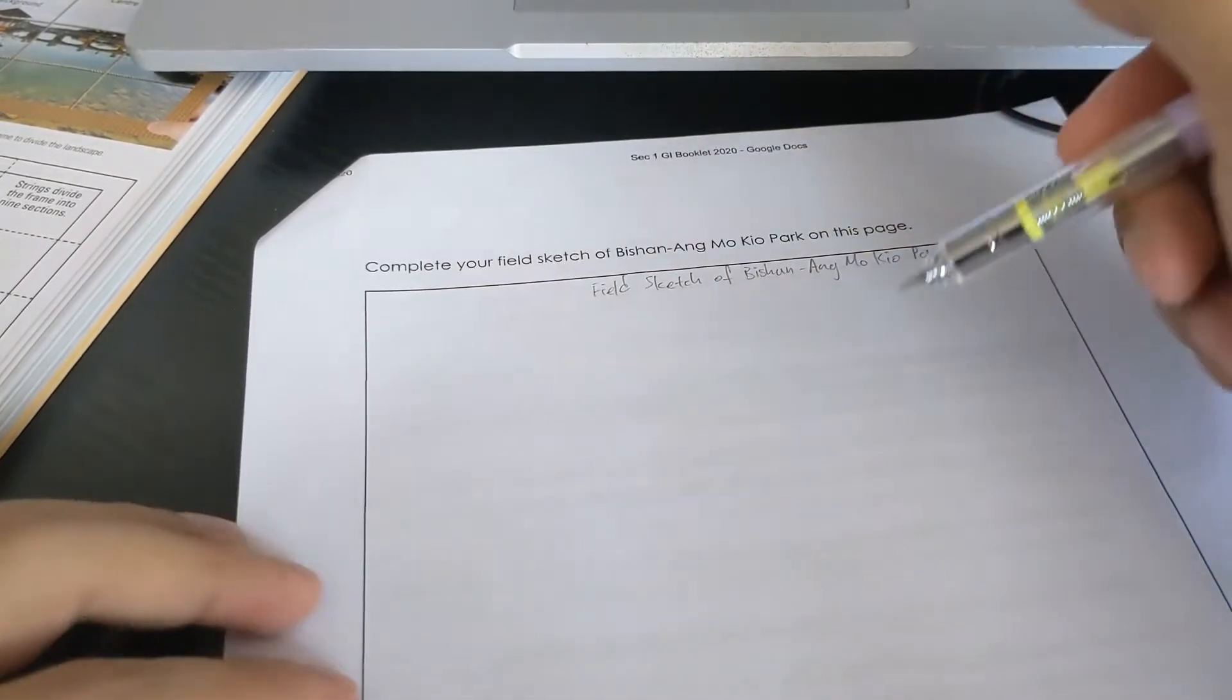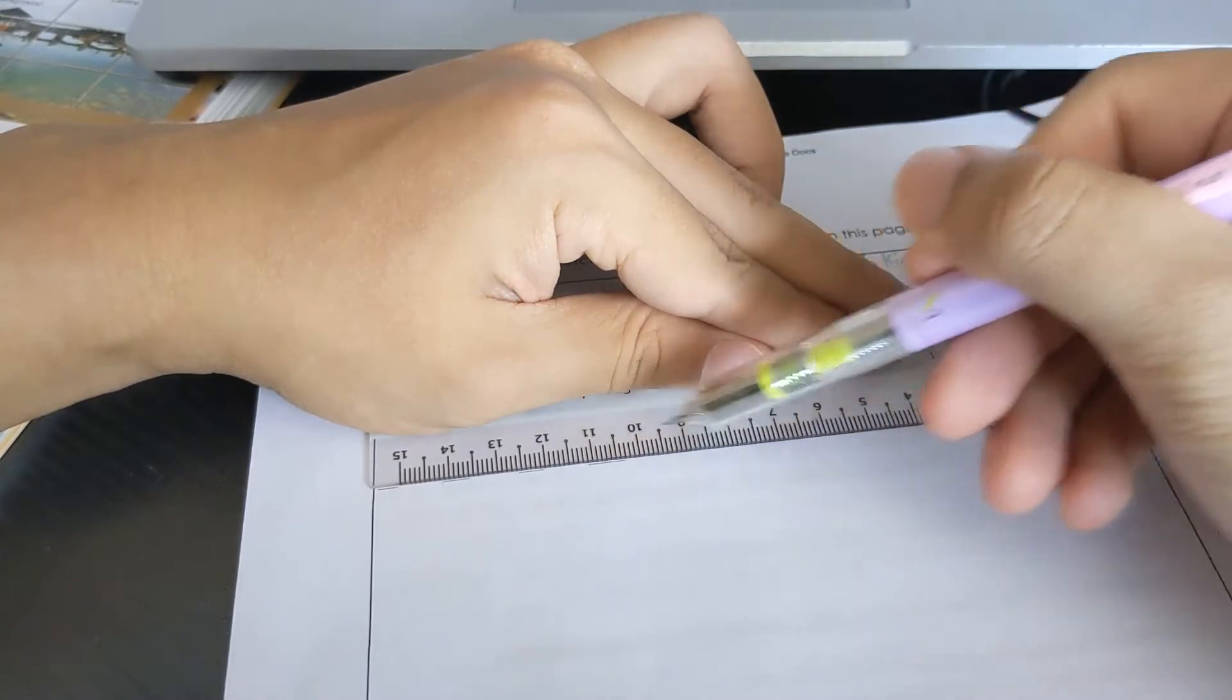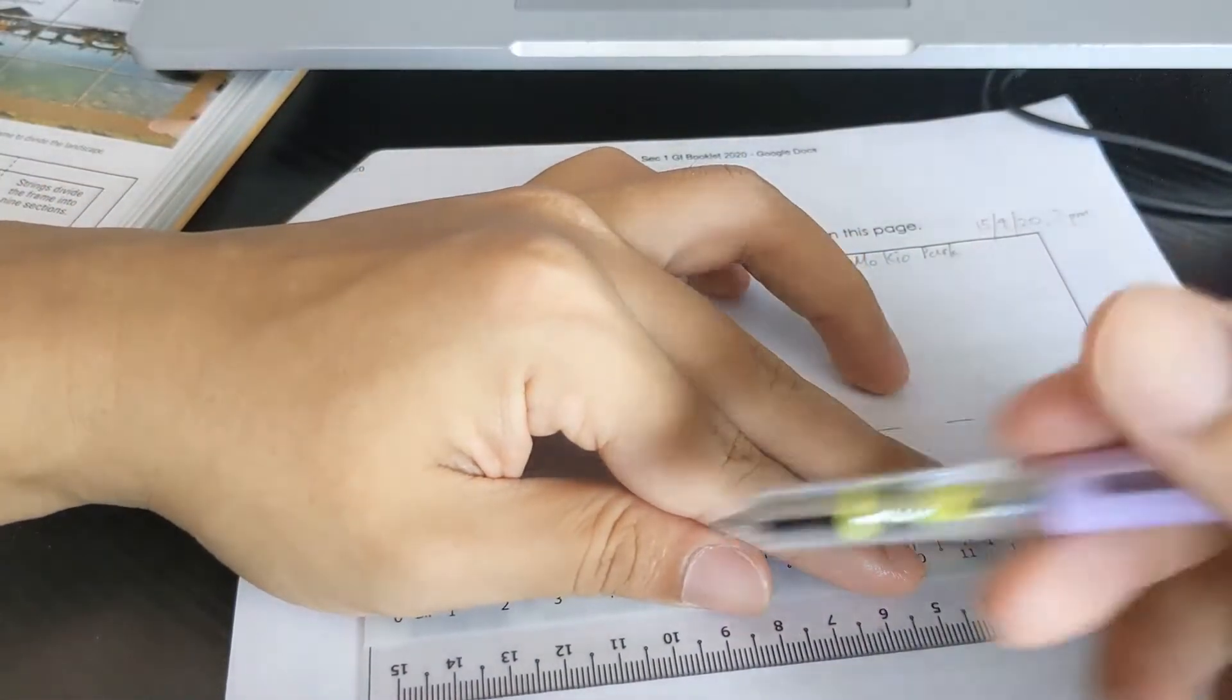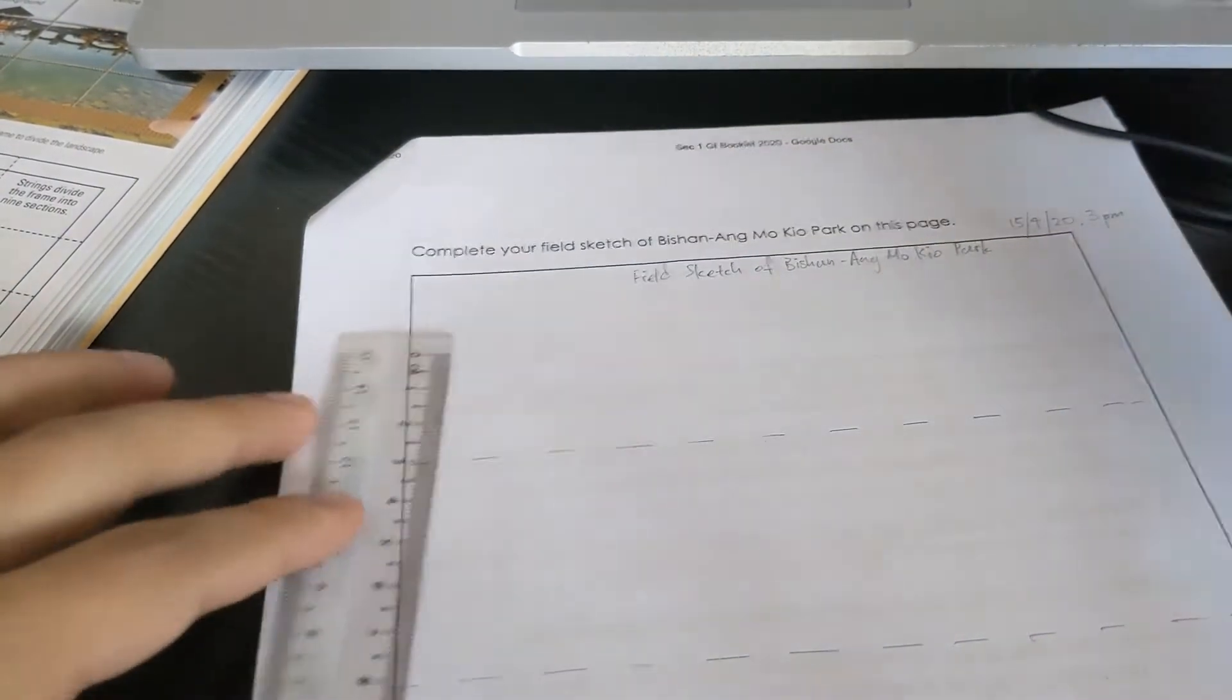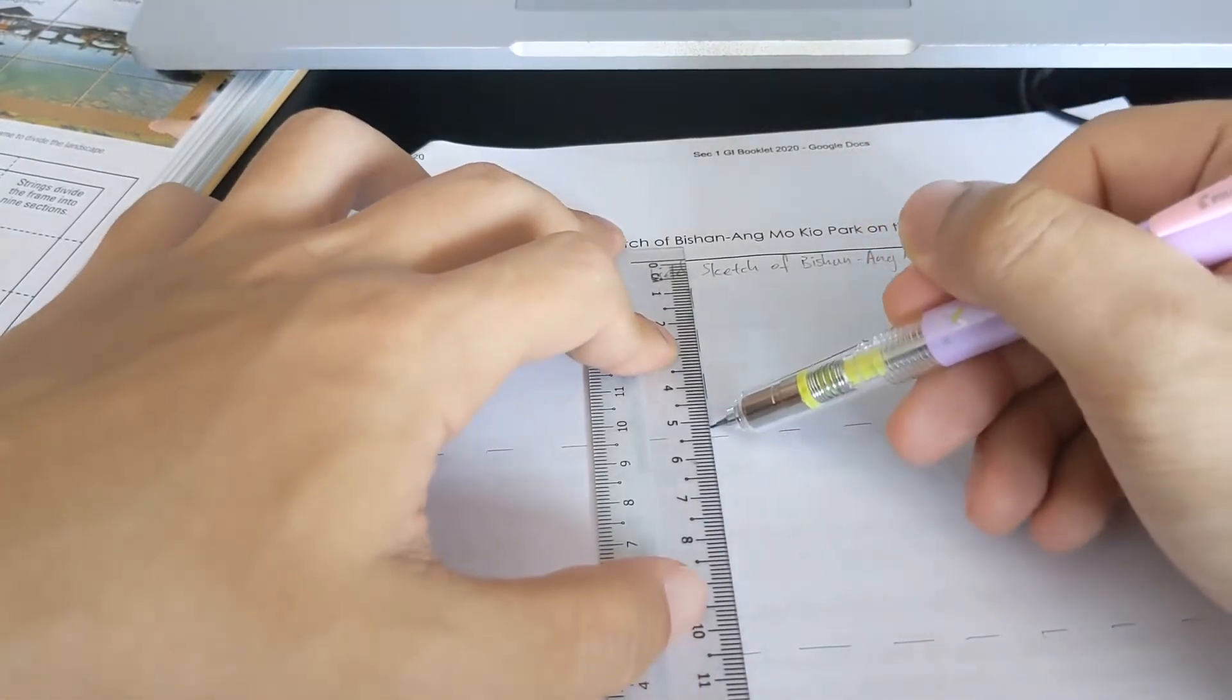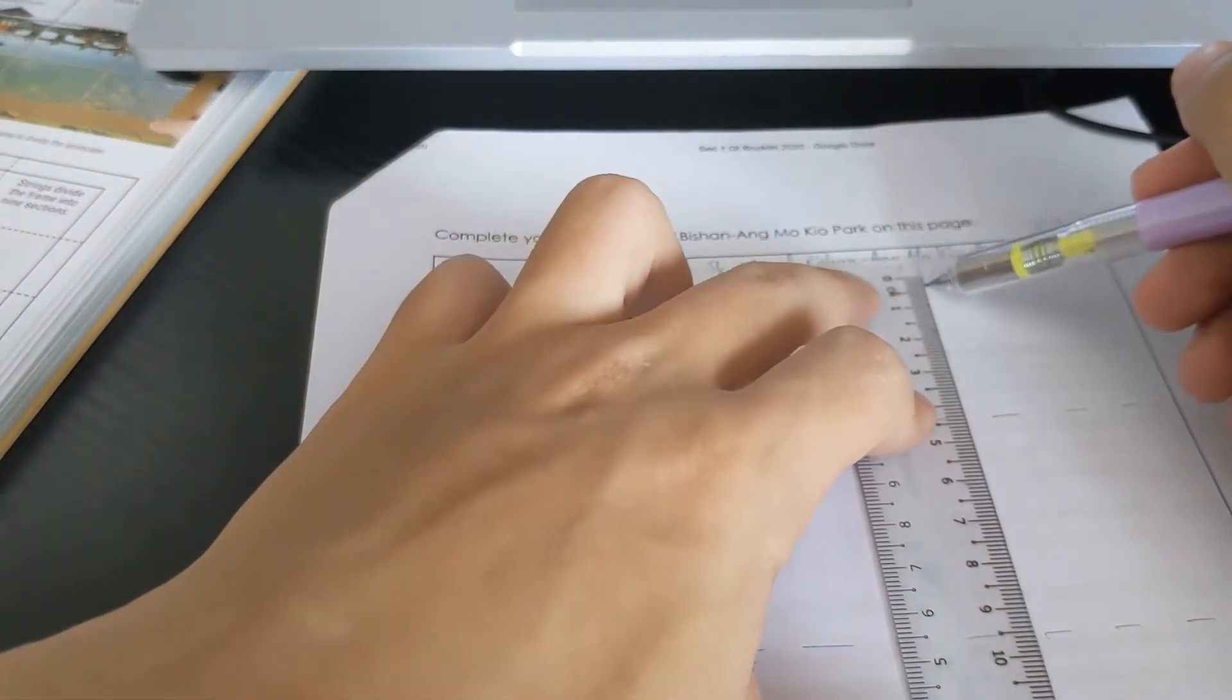Before we start the sketch, I want you to divide your paper into 9 boxes. So how we do so, take a ruler and you can draw dotted lines down to divide the boxes. Remember as per any geographical sketch, you need pencil that are sharp and ruler, preferably transparent as well as your eraser. So we draw dotted lines. And, you realize my boxes here are not really equal, but what you should do...